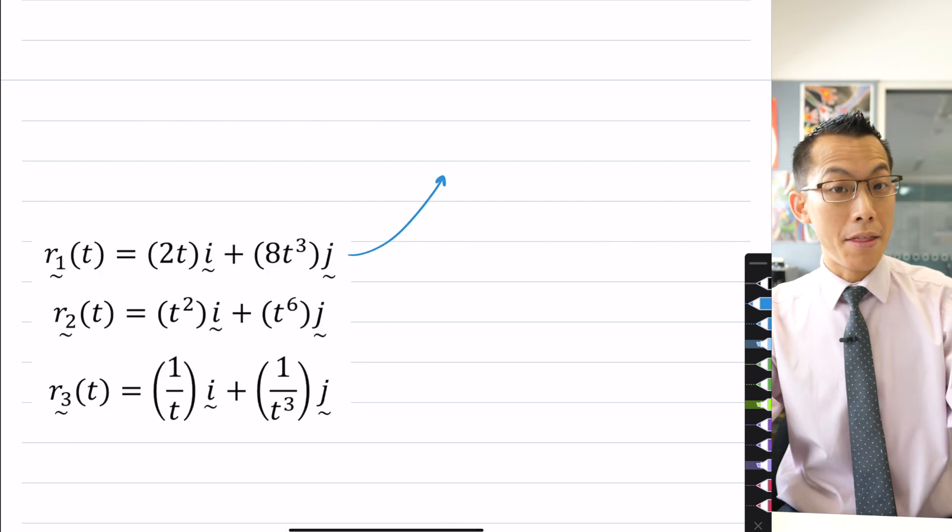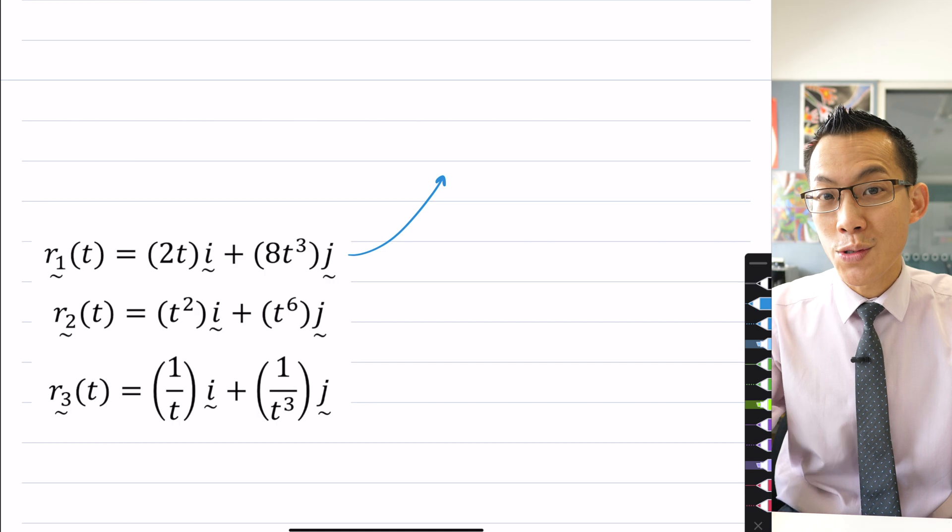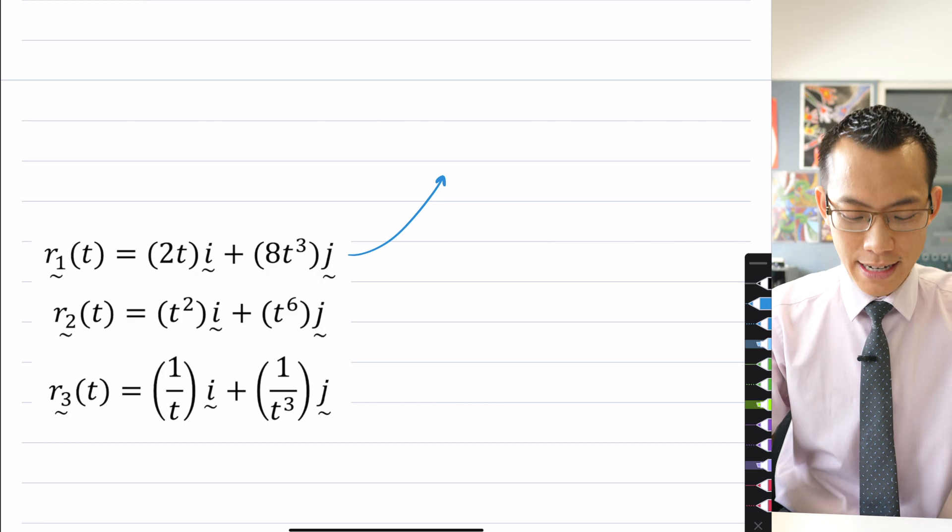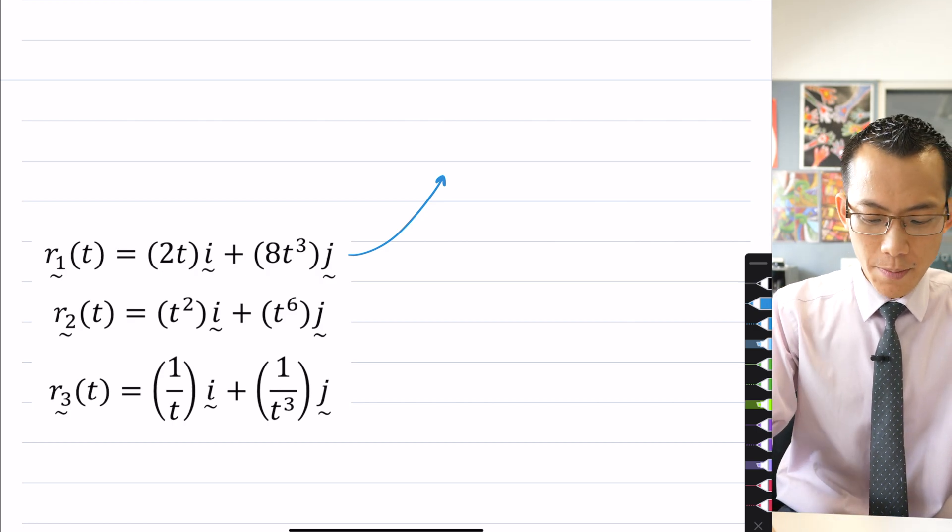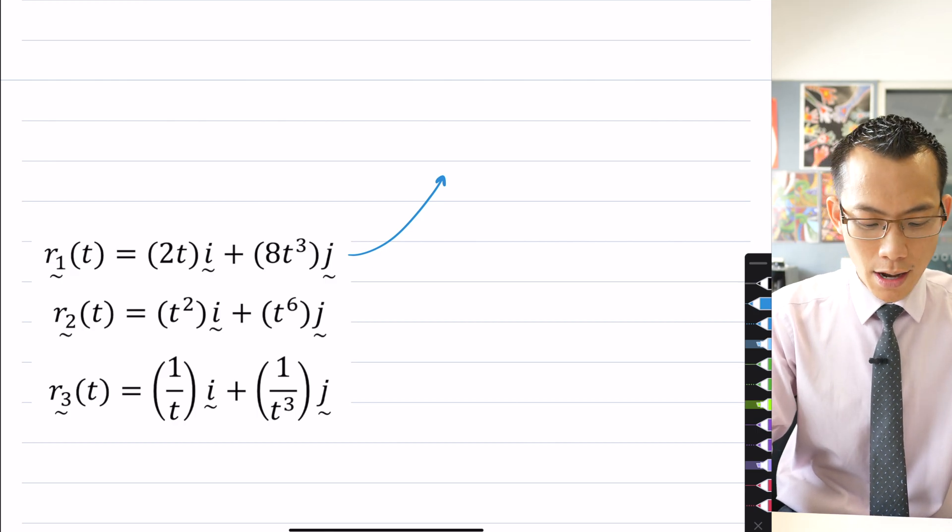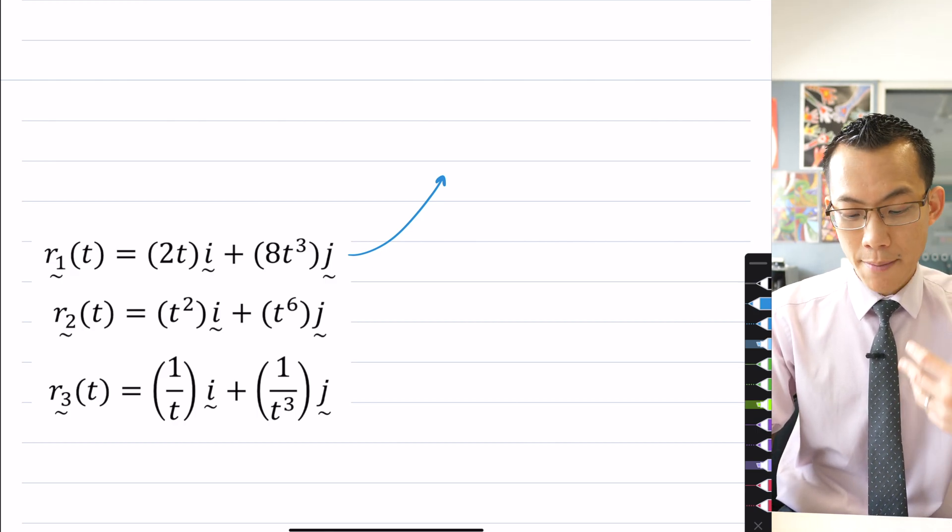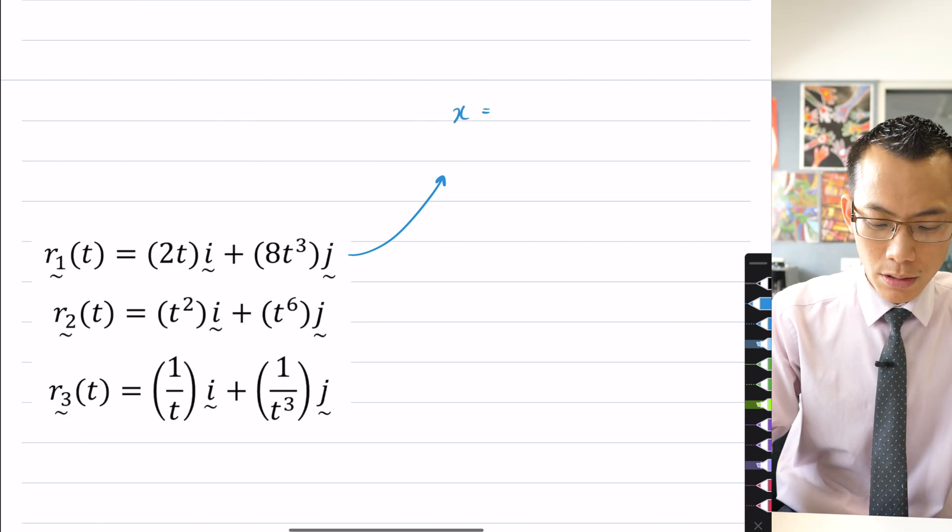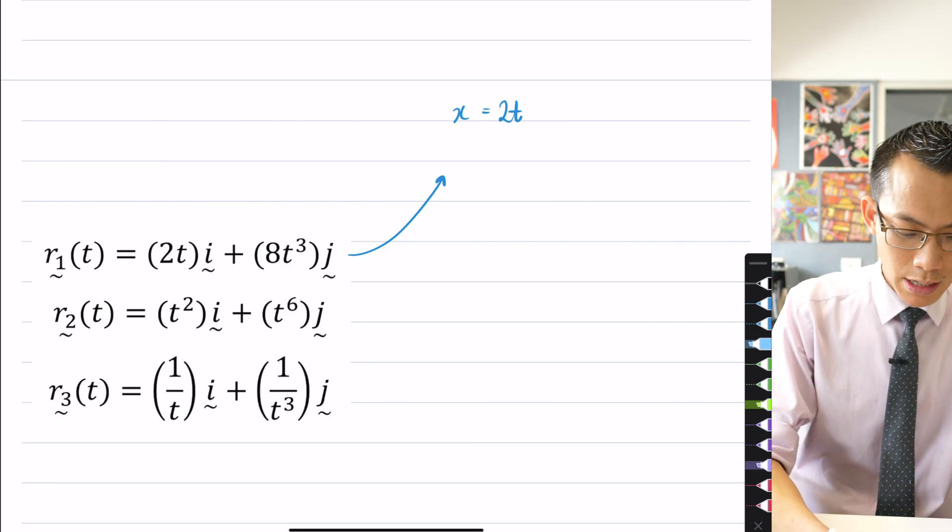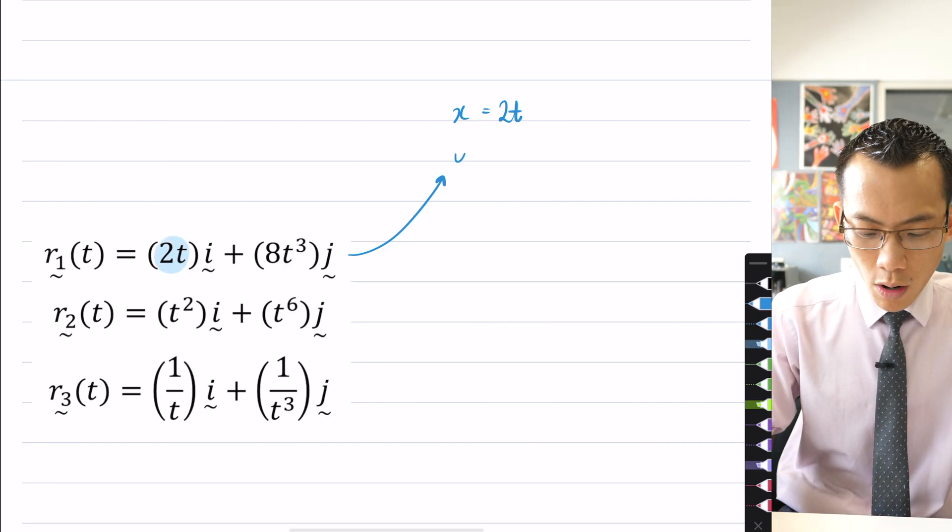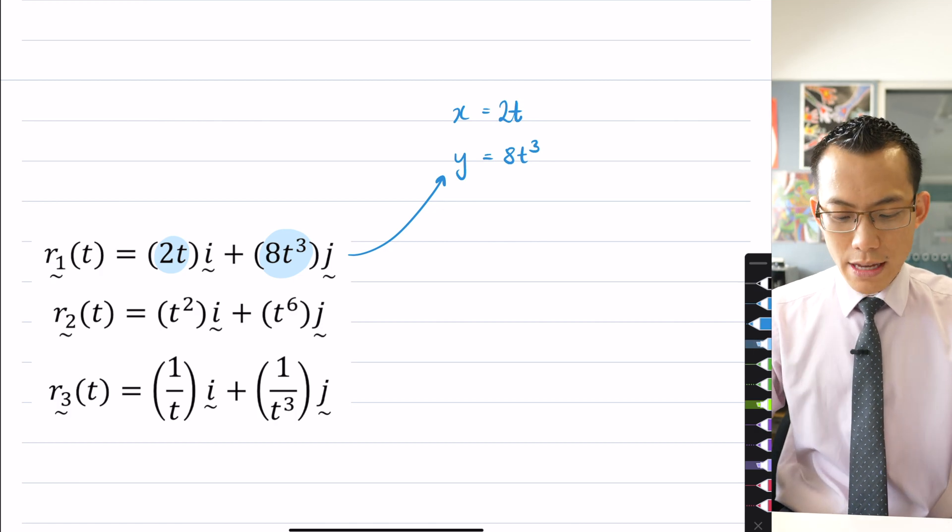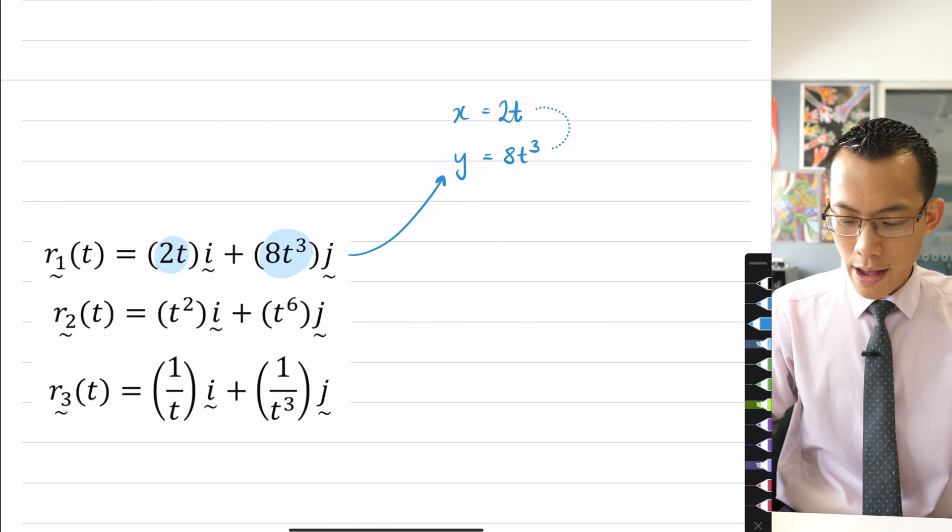Now if I just start with this first parametric equation, I really could use any of them because the question has told me that all three parametric equations have the same Cartesian equation. I'm going to call the horizontal component x, which is equal to 2t right there, and then y equals 8t³, so you can see that in this vertical component over here.